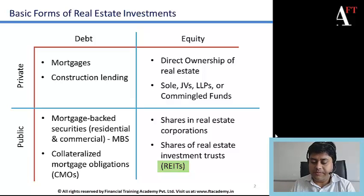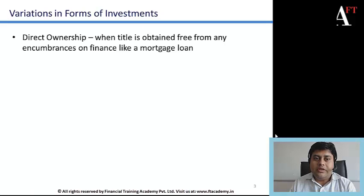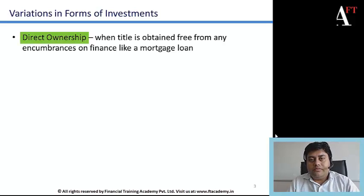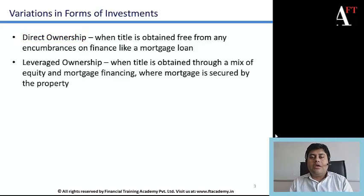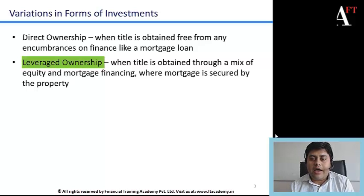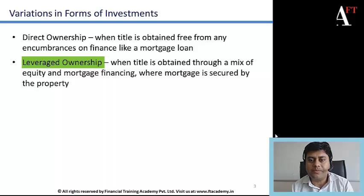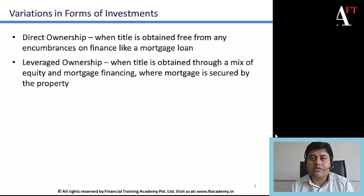There are certain variations in real estate investments. Direct ownership means buying a property where the title is obtained free from any encumbrances — no outstanding mortgage loan — giving a straight 100% equity form of ownership. Alternatively, there is leveraged ownership, where you buy a property using a mix of your own money and mortgage financing from a bank. This mortgage is secured by the property itself in case the owner cannot service the interest or principal repayments.